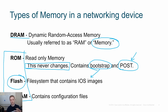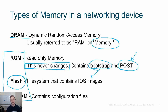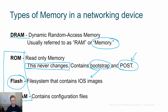Then there's NVRAM. NVRAM stands for non-volatile RAM, which means it does not lose memory if it loses power. It's going to contain our config files — our startup config — and maybe any backup configs we have. A lot of times there are other things that can be put here if we need to store something on a switch or router.